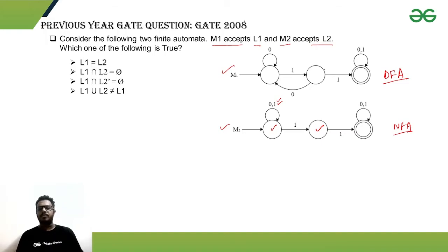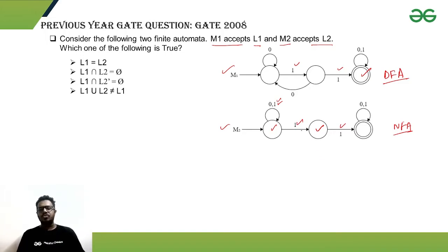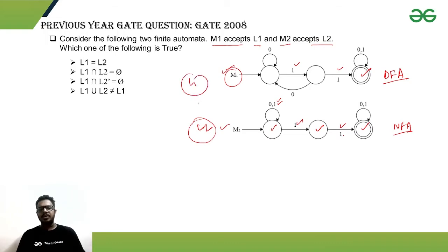Looking at the DFA: a string is accepted if it contains two consecutive 1s. The NFA says the same thing — if the string contains two consecutive 1s, it is accepted. So L1 and L2 are the same language. Therefore option one is correct: language L1 equals language L2.